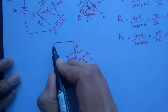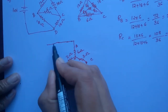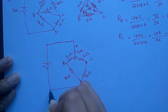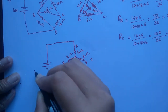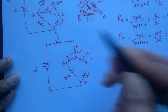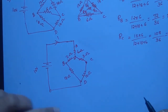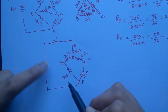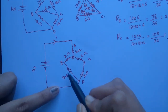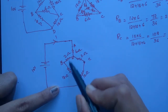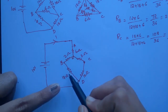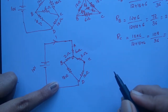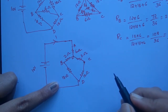Here we have 10 volts. We have to find out this current. This is what we have to solve. We have 18 ohm in series with 2 ohm, giving 20 ohm for that branch.